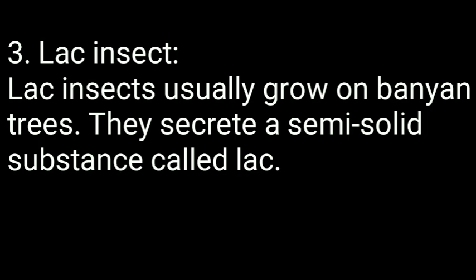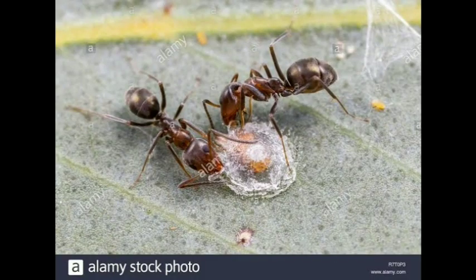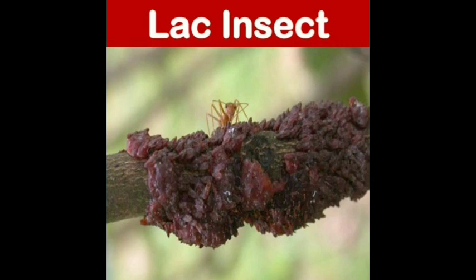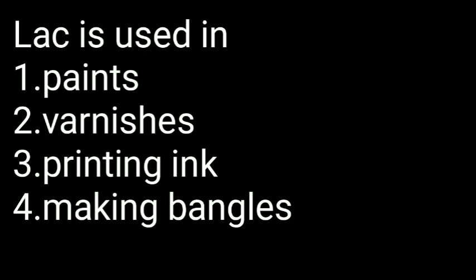Moving on with the next insect, which is the lac insect. Lac insects usually grow on banyan trees. They secrete a semi-solid substance called lac — that's why they are called lac insects. You can see here the lac insect and how it produces lac on the branches of trees. The uses of lac are very important and mostly asked in exams, so please memorize these. Lac is used in making paints, varnishes, printing ink, and it is also used for making bangles. This can be asked in the form of an answer or a web chart.